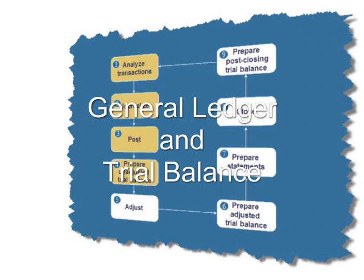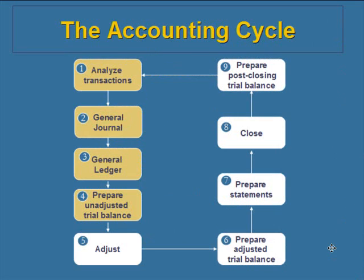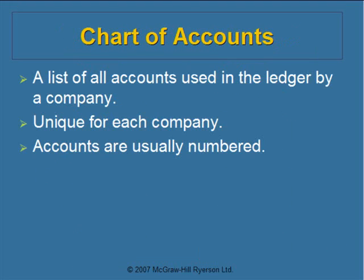In this session, we will cover the next few steps of the accounting cycle. We will post information from the general journal to the general ledger and create a trial balance. In this picture, you see how analyzing transactions in the general journal fit into the accounting cycle. In this session, we're going to spend some time learning about the general ledger and the trial balance.